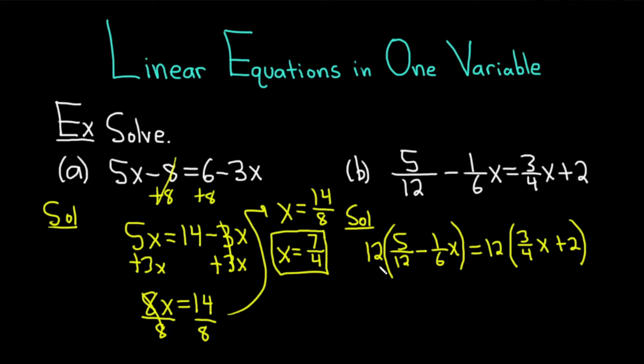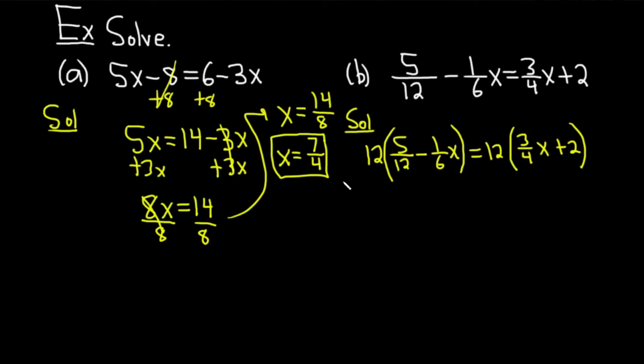So 12(5/12 - (1/6)x) = 12((3/4)x + 2). It really helps to write it down because it's easy to mess up when you have this many fractions. Just figure out what number you can use to get rid of all the fractions, then write it on both sides and put parentheses. Now you distribute.